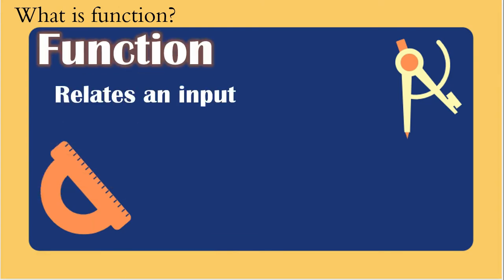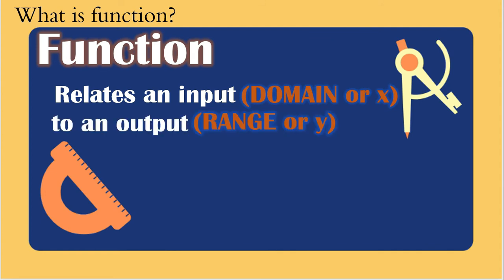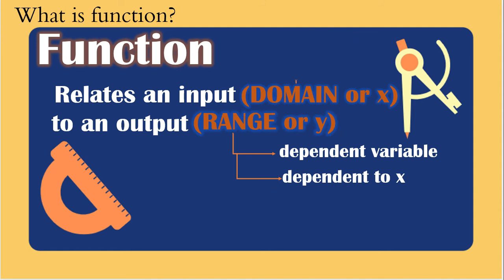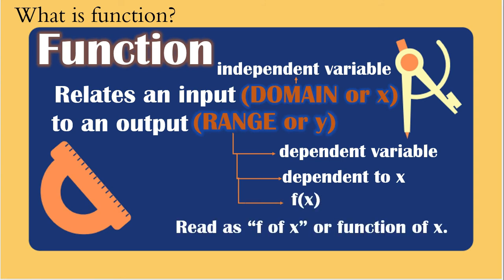A function can also be defined as relating an input — the domain or x — to an output — the range or y. The range is the dependent variable; it depends on the value of x, so the domain is the independent variable. We change the range or y to f(x), read as 'f of x' or 'function of x.' It can also be written as g(x), h(x), or any letter — they all mean the same thing: the function of x.